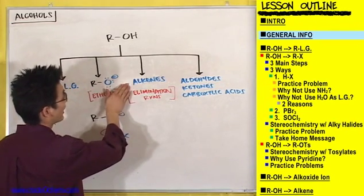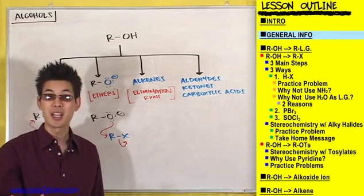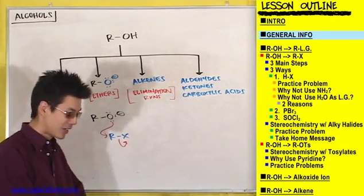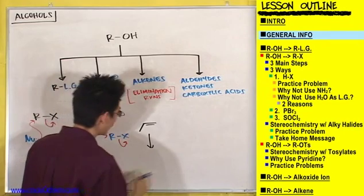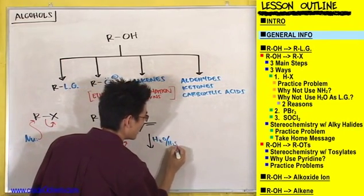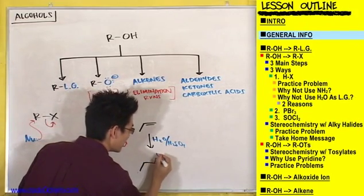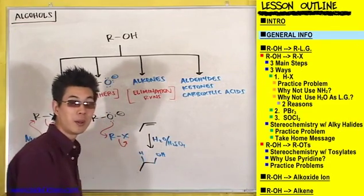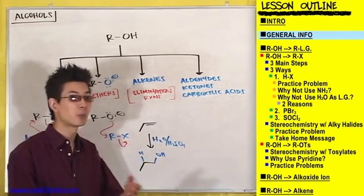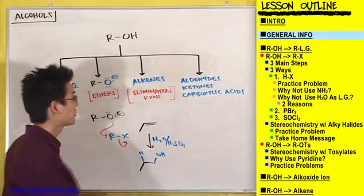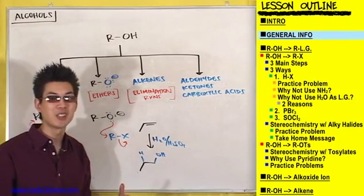In this third type of reaction, we turn an alcohol into an alkene — a double bond. This is great because alkenes can undergo all those addition reactions we saw before in the alkenes chapter. For example, if you take an alkene and add H₂O with H₂SO₄, you get a hydration product. We learned hydration, halogenation, hydroboration-oxidation, and all those good addition reactions from the alkenes chapter — you can now do those after you turn an alcohol into an alkene.